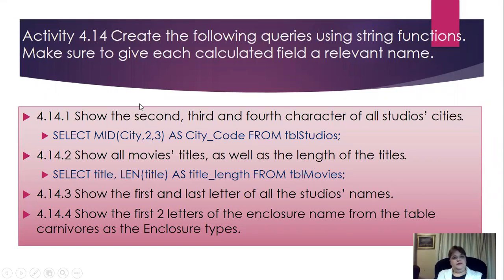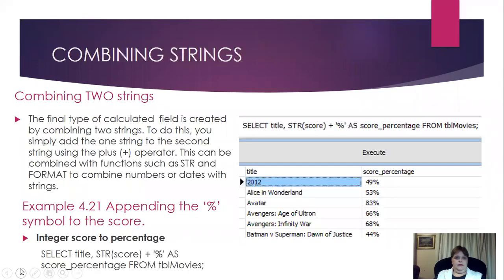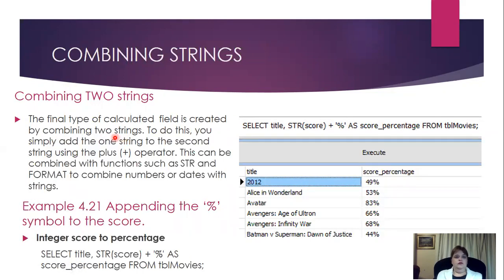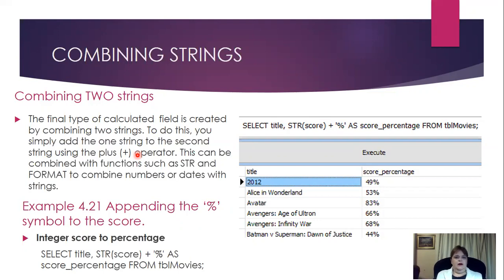You're going to complete Activity 4.14 for homework. Now we're going to look at concatenation — combining strings. The final type of calculated fields is created by combining two strings. To do this, you simply add one string to the second using the plus operator. You've done this since grade 10 in string handling — for example, a show message saying 'Hello World' plus the person's name variable S_Name.